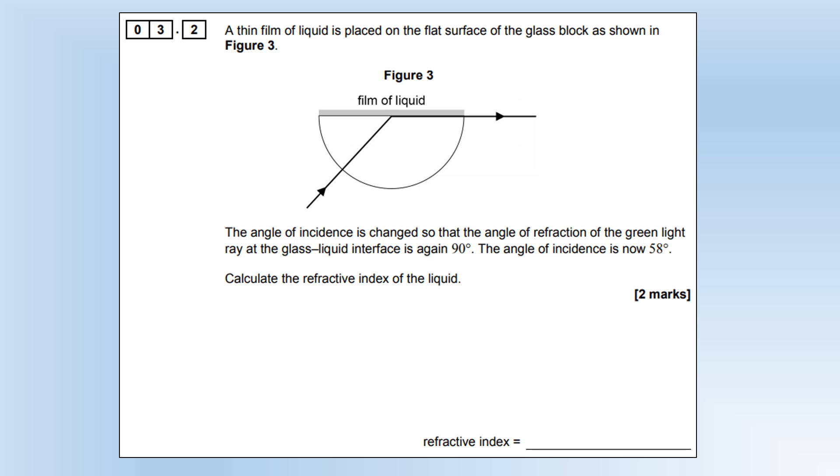Instead of having air across the boundary, we now have a thin film of liquid and the angle of incidence has changed. We've got the angle of refraction at 90 degrees, but the angle of incidence is now 58 degrees. Calculate the refractive index of the liquid. This time n₂ is not 1, so we're going to leave it as n₂. It's already the subject, so we can just plug the numbers in and get n₂ is 1.4.